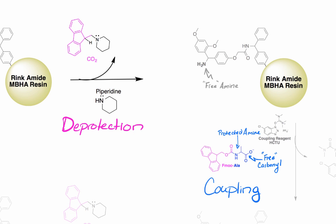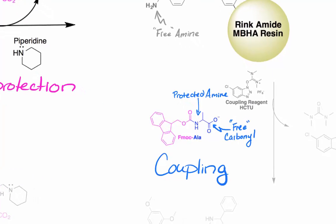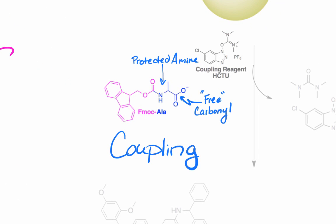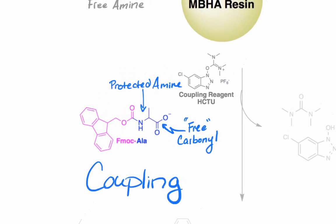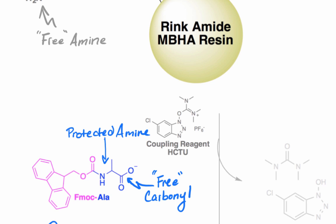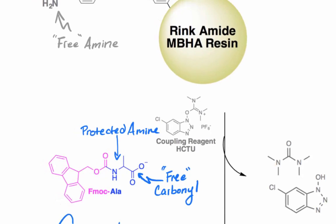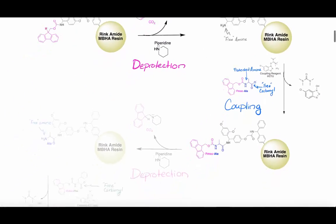The next step is a carbonyl substitution reaction where a new amide bond will be formed between the free amine of the linker and the free carbonyl of an amino acid. The amino acid used in this reaction must have a protected amine; Fmoc is used as the amine protecting group. The carboxylate is not very reactive, thus the carbonyl is activated using a coupling reagent. I am showing the coupling reagent HCTU. Coupling reagents activate the carbonyl for substitution by converting the anionic oxygen into an acceptable leaving group. Soluble side products of the coupling reaction are rinsed away and the amino acid is left covalently attached to the resin.